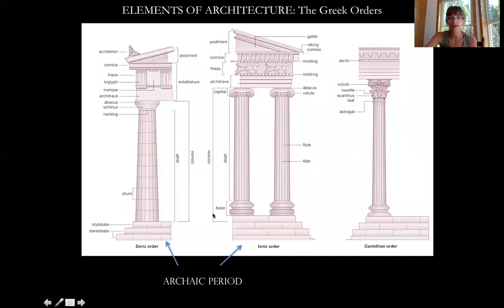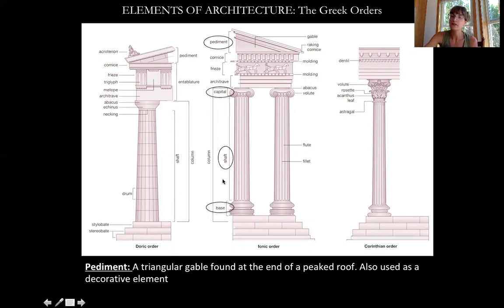Here are the columns you see within this time period — we call these the Greek orders. There are three different types: the archaic period encompasses the Doric order and the Ionic, and then the Corinthian comes a little bit later. A few key terms: the base is at the bottom of the column, the column itself is called the shaft, and at the very top there's an architectural element called the capital. The Doric order — which will be used on the temple we're about to look at — does not actually have a specific decorative element at the base, but all three Greek orders have decorative elements at the top called the capital.